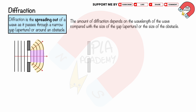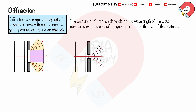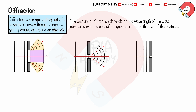As the gap size decreases to approach the wavelength, diffraction becomes greater, resulting in more spreading and curvature of the wave fronts. As the gap size decreases to much smaller than the wavelength, diffraction increases further, resulting in greater spreading and curvature, but the diffraction pattern may become less distinct.